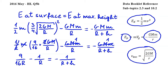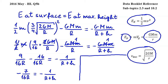Let's combine the two terms on the left side. To do this I will find the common denominator, multiplying 1 over R by 16 over 16, which gives 16 over 16R. So I get 9 minus 16, giving negative 7 over 16R, equal to negative 1 over (R plus H). Cancelling the negative signs and cross-multiplying gives us 7R plus 7H equals 16R.